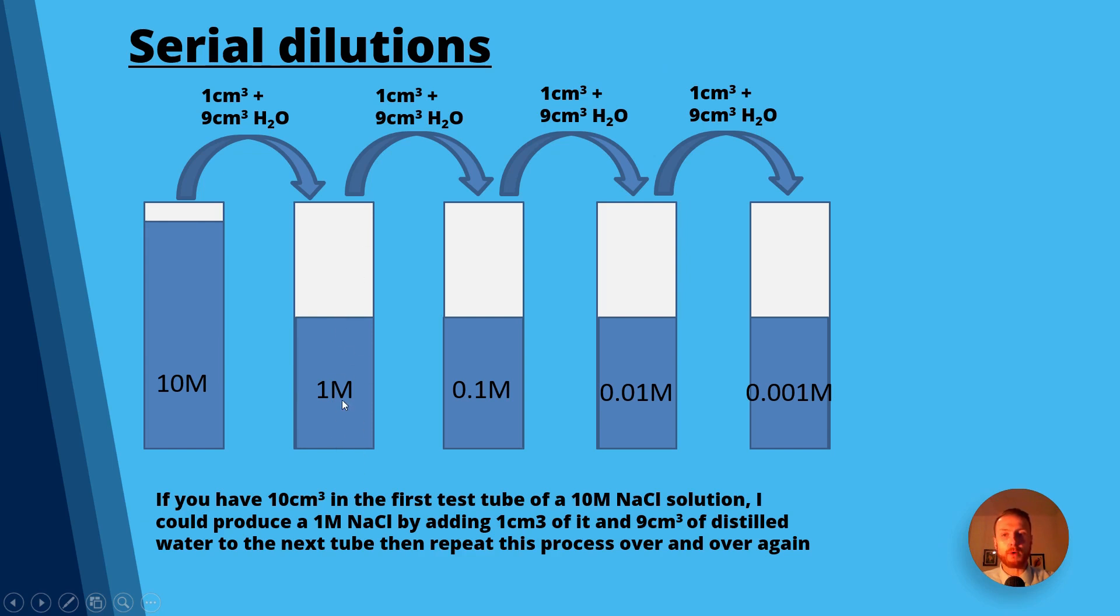Now this is a recap on serial dilutions. We're going to focus on one molar sucrose solution or sodium chloride solution. If you wanted to dilute it by a factor of 10, what you would simply do is take one centimeter cubed of your sucrose or sodium chloride solution and place it in a test tube along with nine centimeters cubed of distilled water. That will dilute it by a factor of 10. If you want to dilute it by half, you just do half water, half of your concentration.